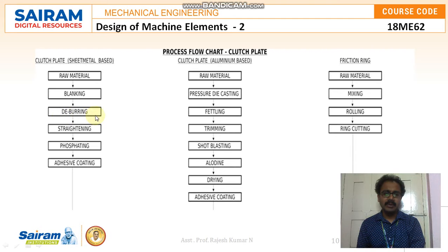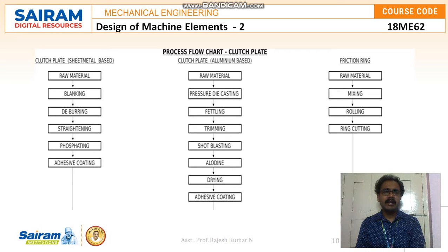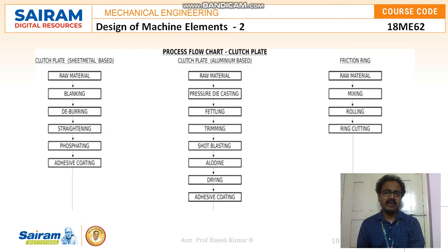Once the raw material is chosen, we proceed with the blanking process, followed by the deburring process. Blanking and deburring is basically about removing dirt, pollutants, oiliness, luster, and surface irregularities due to shifting, as well as any corrosion. After deburring, we go with the straightening process. Since the sheet metal has very light thickness, we cannot straighten it manually — we use heavy loaded punching machines for straightening.